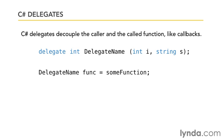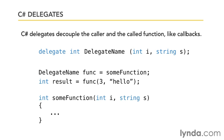When you want to use the delegate, you use it like any other type name. Here I'm declaring a variable named 'func' of type 'delegate name', and assigning it to some function. As long as a function matches the same format as the declared delegate, you can switch that function in and out as needed. Then you just call it like any other function — passing in the integer argument 3 and string 'hello', getting a result back. The 'some function' callback returns an integer and takes an integer and a string, matching the delegate's format.